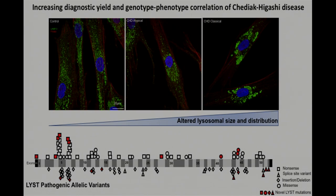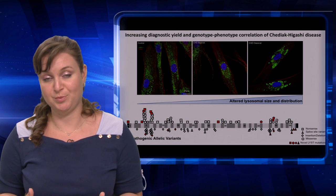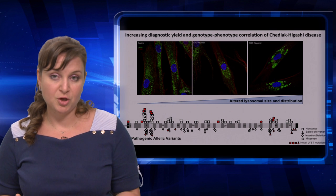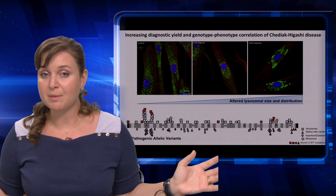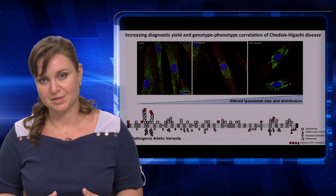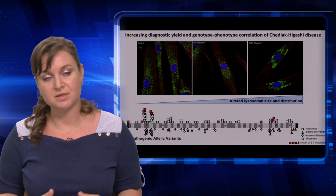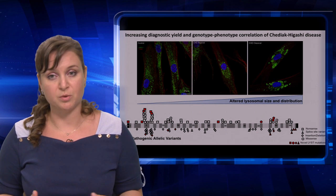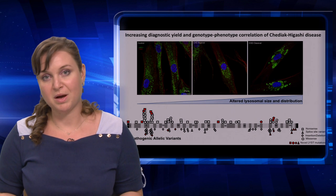To summarize, the clinical severity of classical and atypical CHD patients correlates with the molecular genotyping and lysosomal distribution and size in human fibroblasts. Our results are valuable for understanding the spectrum of disease, establishing a genotype-phenotype correlation, and improving diagnosis and clinical care for CHD patients. Nonetheless, it might serve as another example for other lysosomal diseases. Thank you for listening, and think about CHD.